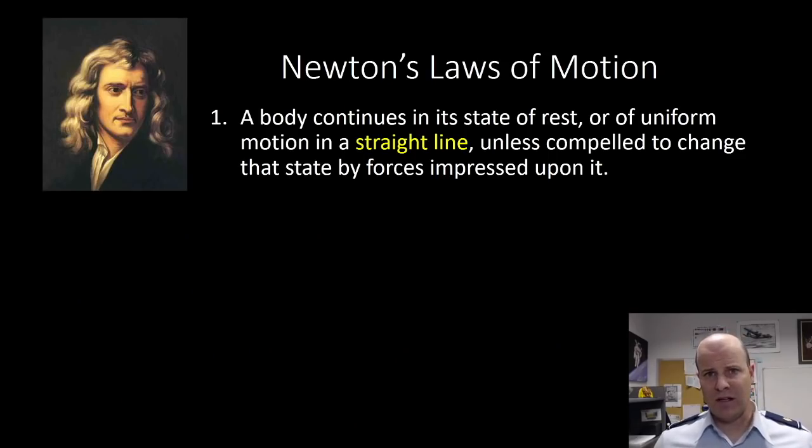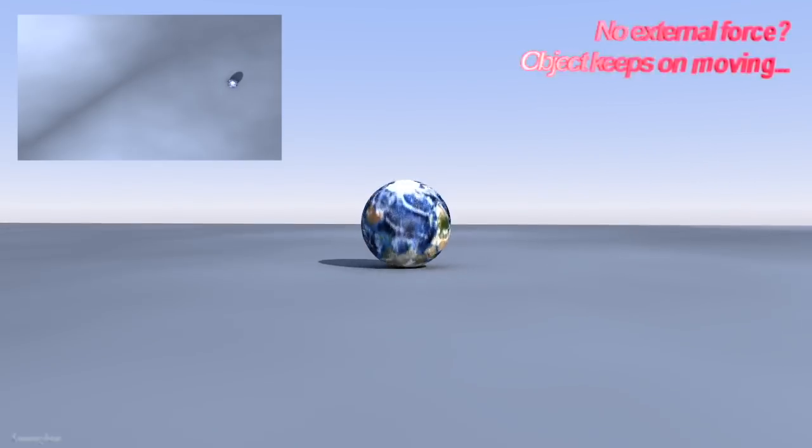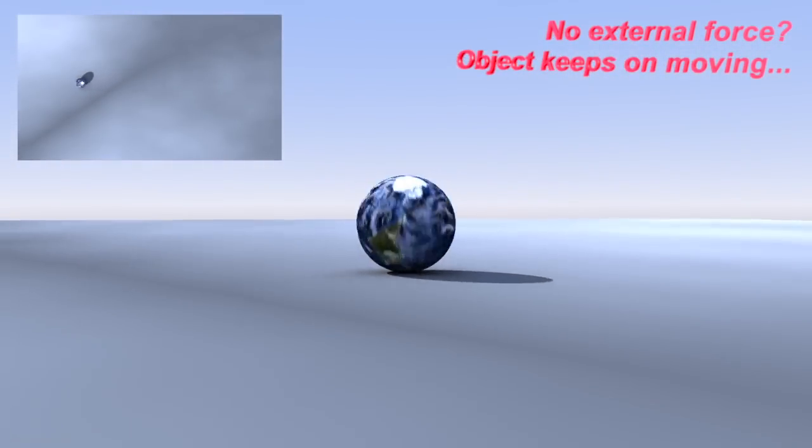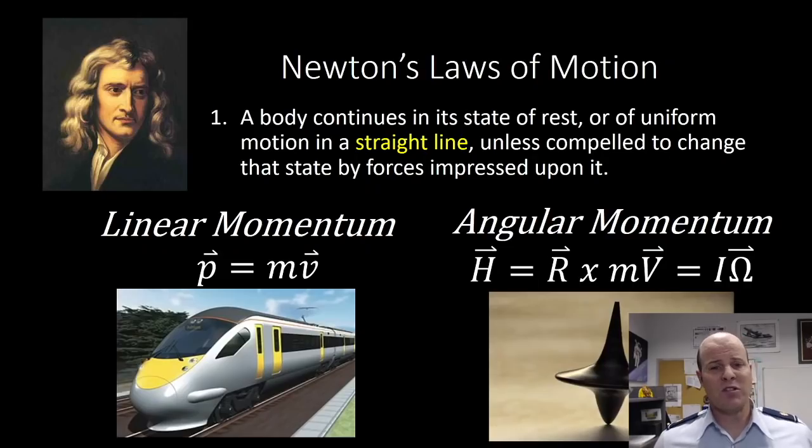So Newton had three laws. We're going to talk about those here. The first stated explicitly, it states that a body continues in the state of rest or uniform motion in a straight line unless compelled to change that state by forces impressed upon it. We have two examples of that.